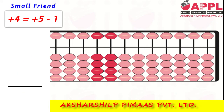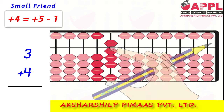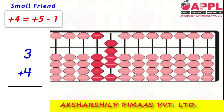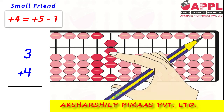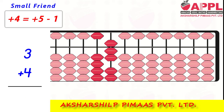Next, 3 plus 4. Again, addition of 4: add 5 less 1. That is 7.